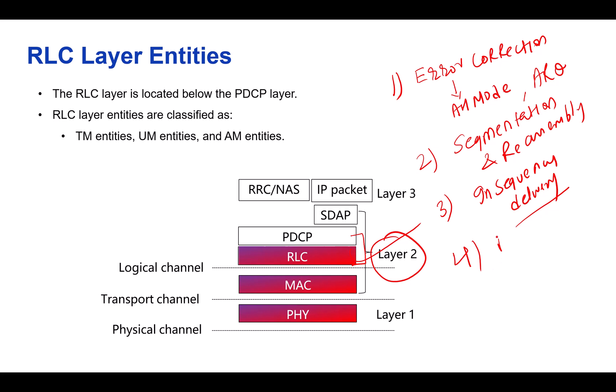The fourth function is duplicate detection. RLC can prevent processing the same packet multiple times, which also helps save bandwidth.